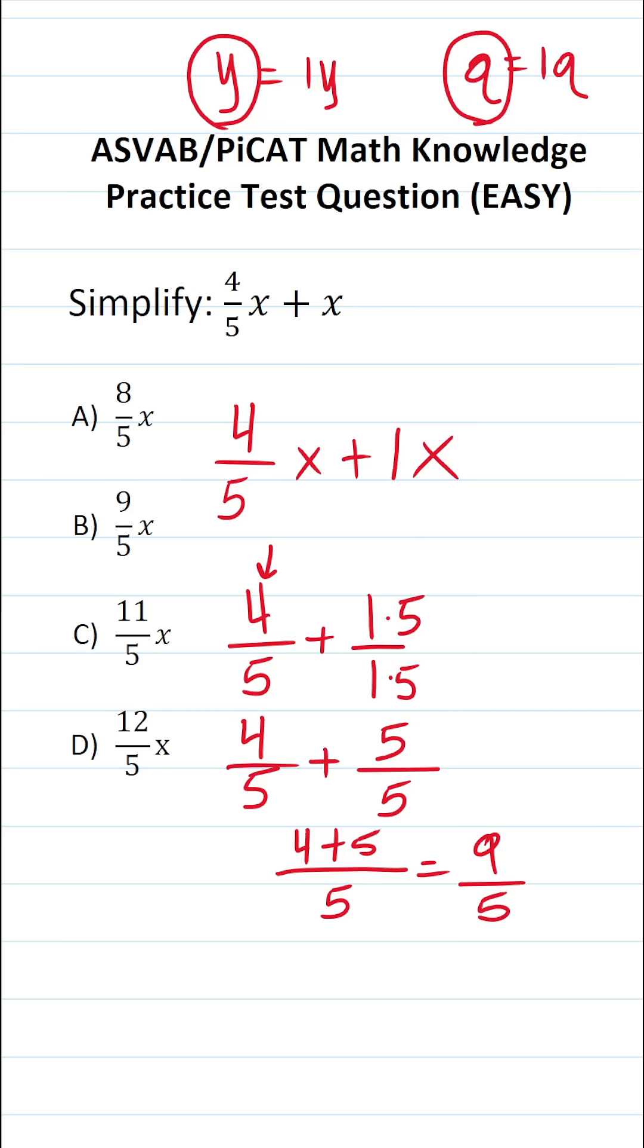So four-fifths x plus one x is going to be nine over five x. And as you can see, the answer choices are left in improper form. You should expect that on test day, sometimes they'll take the improper fraction and convert it to a mixed number, and sometimes they'll leave the improper fraction as is. In this case, they left the improper fraction as is. So the answer to this one is B, nine over five x.